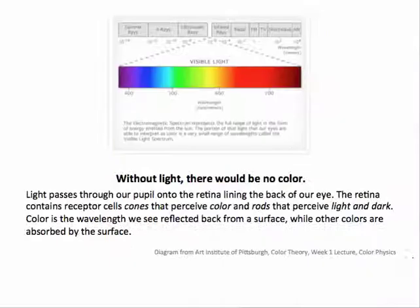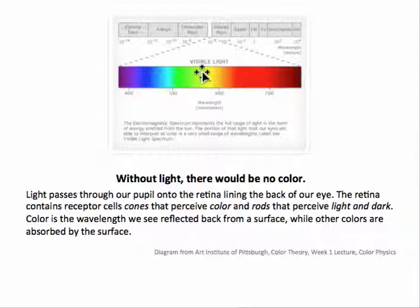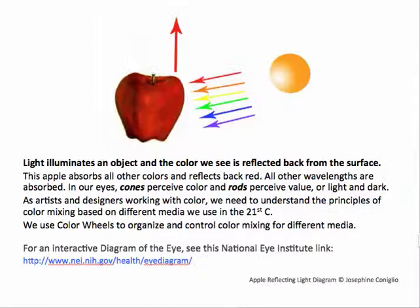So without light there would be no color. Light hits our pupils and the retina lining the back of our eye, which contains receptor cells called cones. We perceive color through cones, and rods perceive light and dark — the value. The color is the wavelength reflected back from the surface while all the other colors are absorbed, as in this example of an apple.